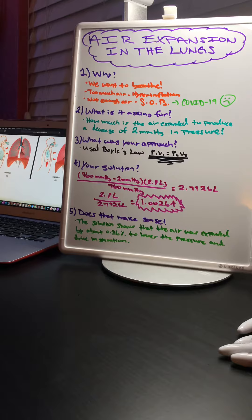So what's the question asking for? Well, the question is asking how much is the air expanded to produce a decrease of 2 millimeters of mercury in pressure? My approach to this was Boyle's Law, P1V1 equals P2V2.